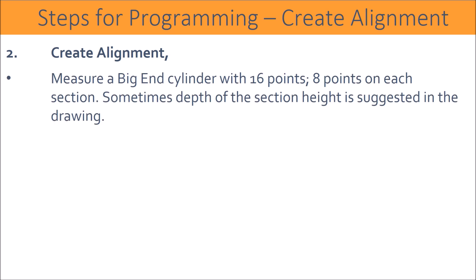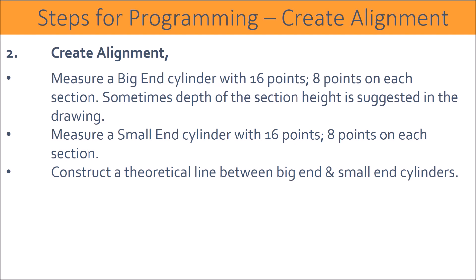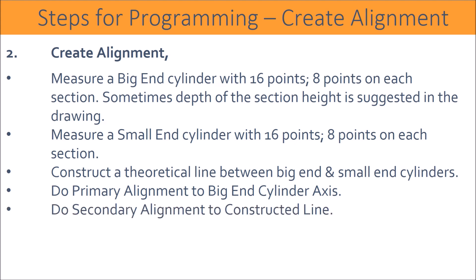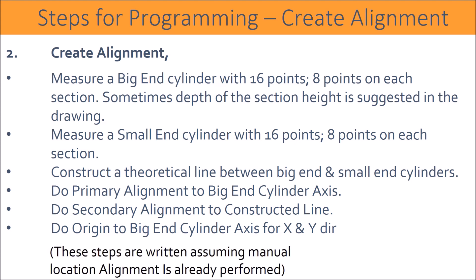Measure the big end cylinder with 16 points, 8 points on each section. Sometimes the depth of the section height is suggested in the drawing. Measure the small end cylinder with 16 points, 8 points on each section. Construct a theoretical line between big end and small end cylinders. Do primary alignment to the big end cylinder axis, secondary alignment to the constructed line, and set origin to the big end cylinder axis for X and Y direction. These steps are written assuming manual location alignment is already performed.